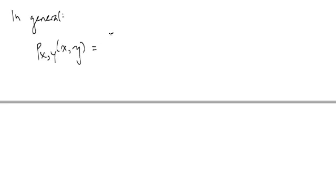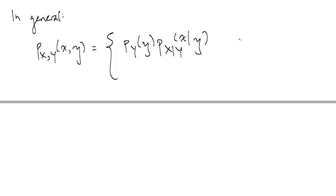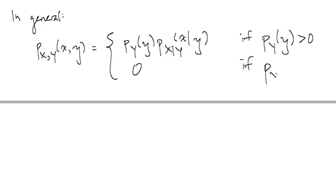In general, what we have is that P(X,Y)(little x, little y) is equal to P(Y)(little y) times P(X|Y)(little x | little y) if P(Y)(little y) is greater than zero, and it's zero if P(Y)(little y) is equal to zero.